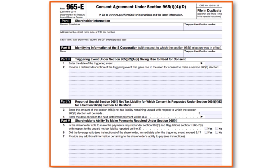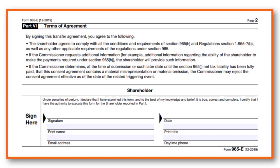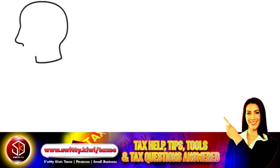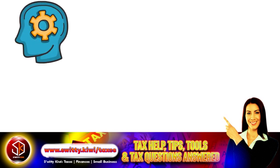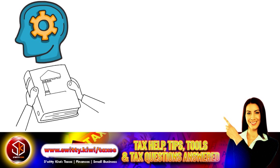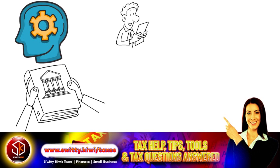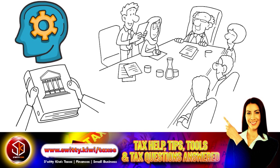The next screenshot shows Part 6, which contains the terms of the agreement. Don't forget to sign and date the form — you also have to print your name, your title, and your daytime phone number. The bottom line is that Form 965-E is part of the Tax Cuts and Jobs Act; it was not part of the original Internal Revenue Code but was added later as part of ongoing legislative updates to tax law.